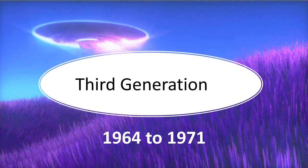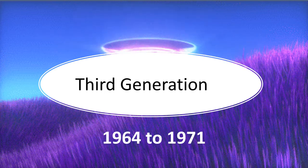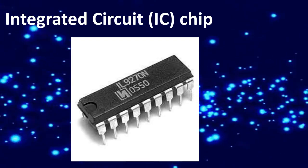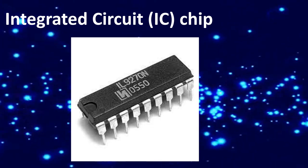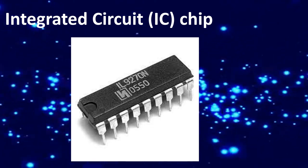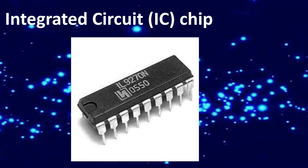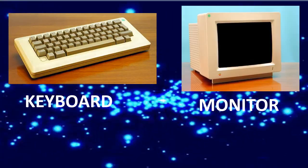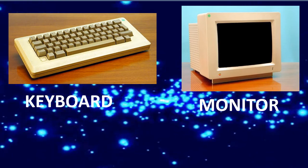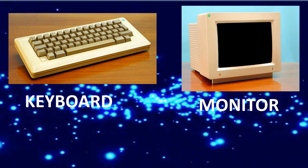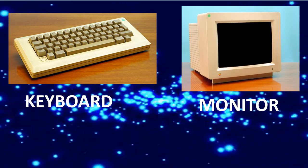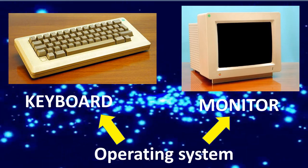Third generation period, 1964-1971. The third generation computers used integrated circuit chips. In an IC chip, multiple transistors are placed on a silicon chip. Keyboards were used to input and monitors for output. The keyboard and the monitor were interfaced through the operating system.